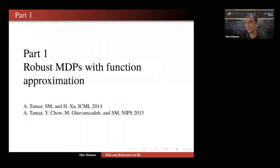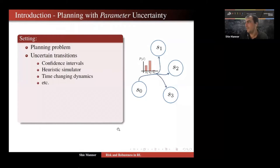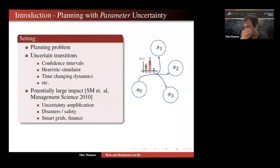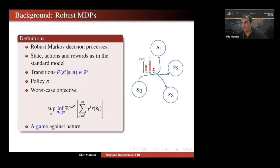I'm going to start with some work we've done on robust MDPs with function approximation. Let's start with the model — the classical MDP model. You start in state s0, and then with some conditional probability you transition to s1, s2, s3. That's a classical planning problem where everything is known. But we don't have clarity on the transitions — maybe they come from confidence intervals or a simulator. We've shown in the past that there can be a potentially very large impact for those problems, both us and others in different applications.